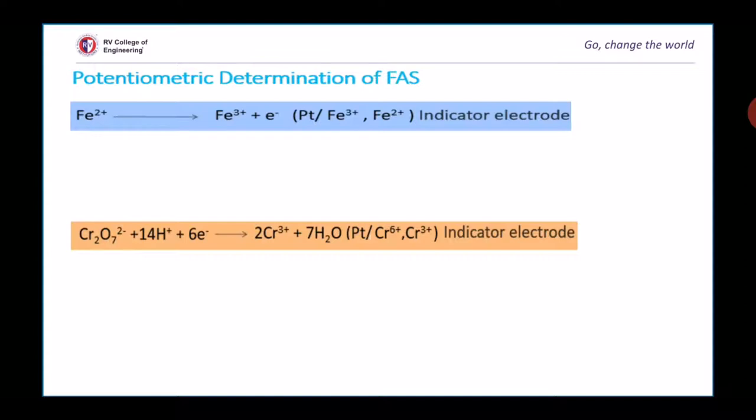When titration is commenced, both Fe²⁺ and Fe³⁺ ions are present in the solution, developing an electrode potential which is picked up by platinum wire. Thus platinum electrode behaves as iron electrode, which is represented as shown in the figure.